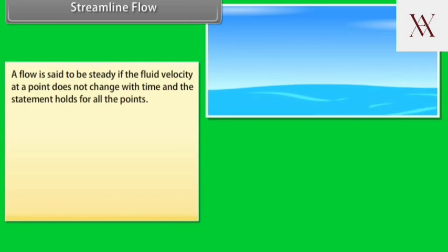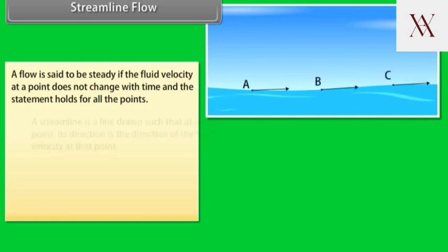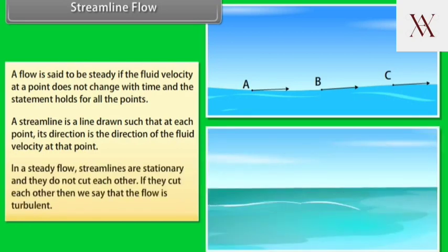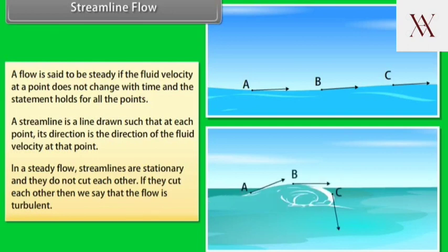Streamline flow. A flow is said to be steady if the fluid velocity at a point does not change with time and the statement holds for all points. A streamline is a line drawn such that at each point its direction is the direction of fluid velocity at that point. In a steady flow, streamlines are stationary and they do not cut each other. If they cut each other, then we say that the flow is turbulent.